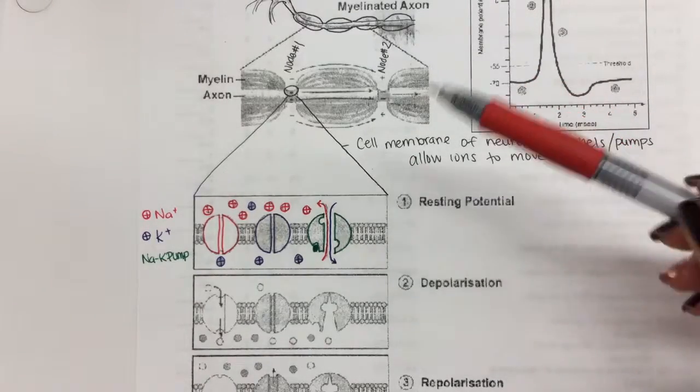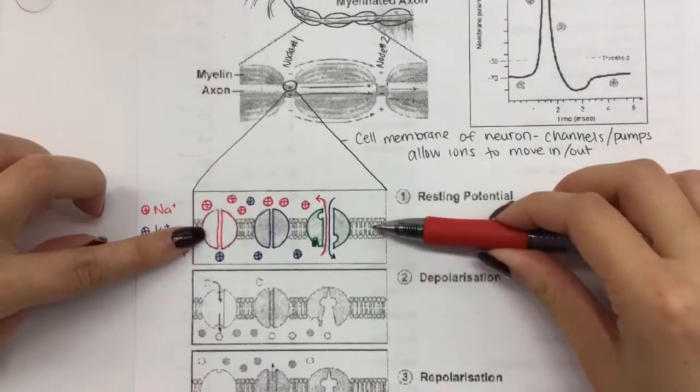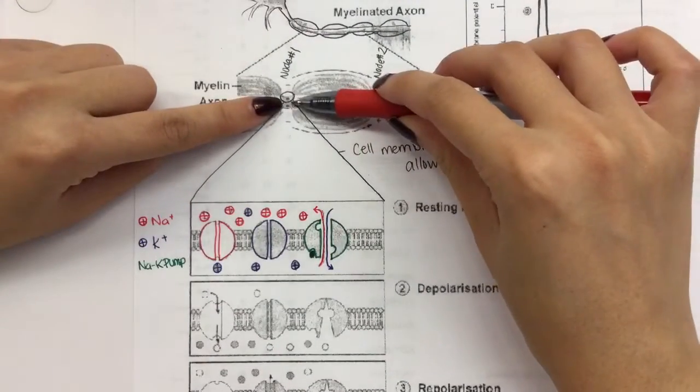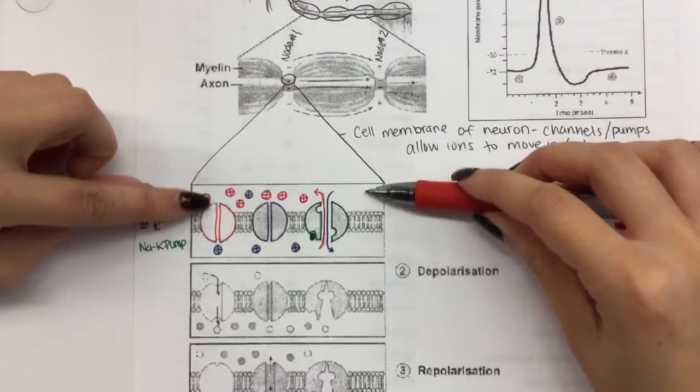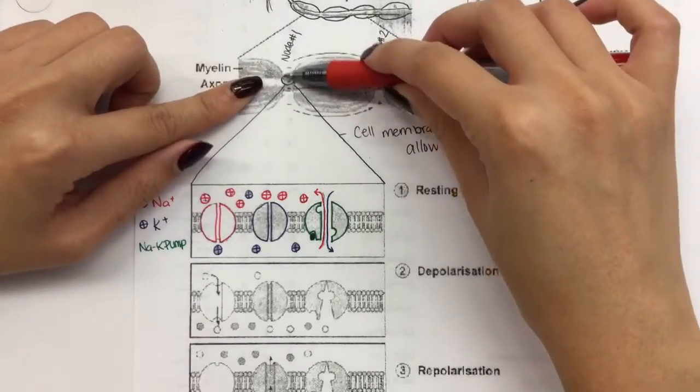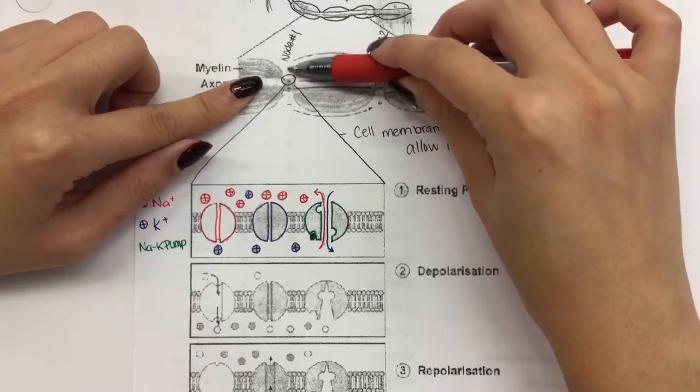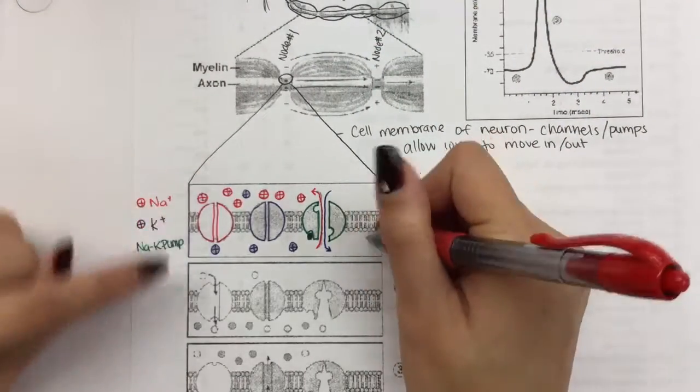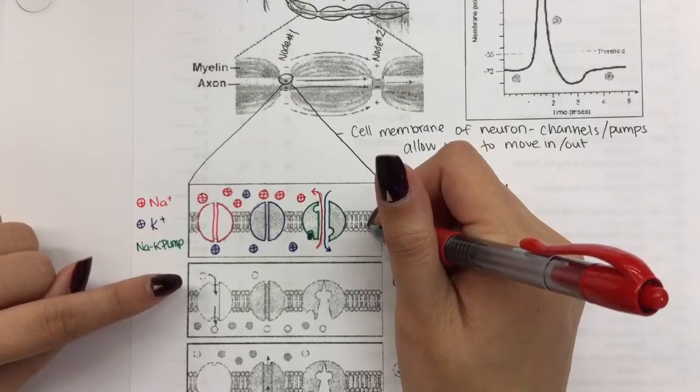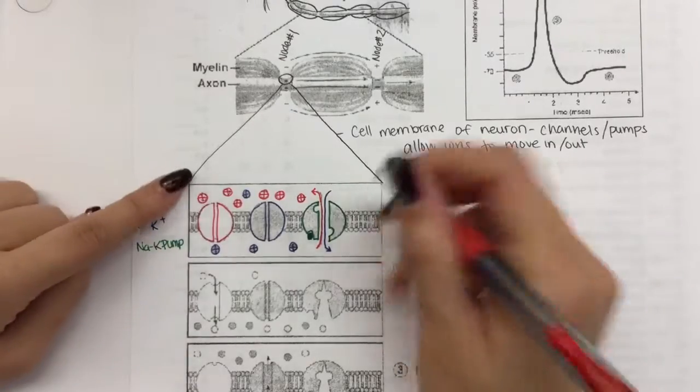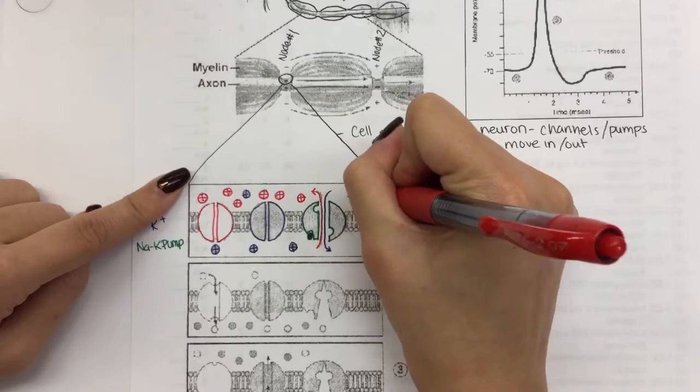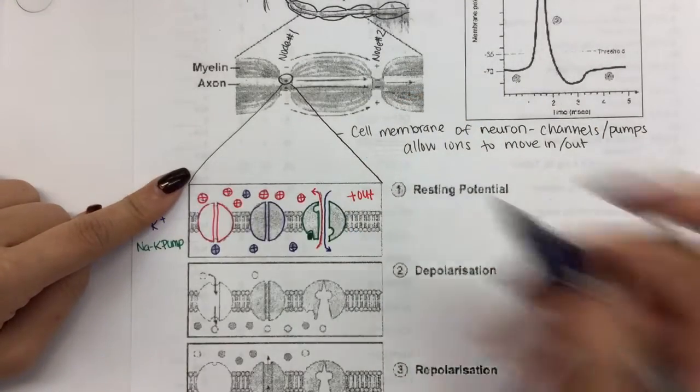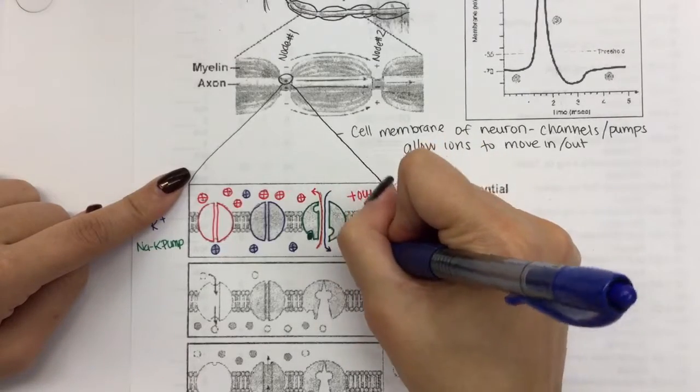In this picture, the bottom half of this box right here is supposed to be the inside of the neuron. The top half right here is supposed to be the outside of the neuron. So this is outside, this is inside. Which side has more positives? Outside or inside? Outside. So we're going to say the outside is more positive. And if outside is more positive, that means inside is more negative.